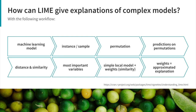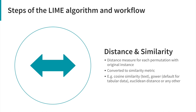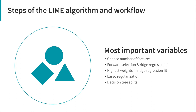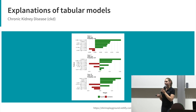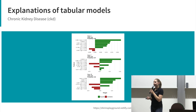For the similarity metric, the defaults are cosine similarity for text models, and for the R LIME package, Gower distance is now the default for tabular data, or Euclidean distance. The most important variables are selected — there are different ways to calculate this — and you fit a simple local model; ridge regression is the default in the LIME package, but you could use any model. You've already seen a similar plot: this is based on an AutoML model for chronic kidney disease — for three different patients, you can see for each feature whether it supports or contradicts the prediction.